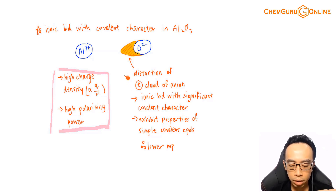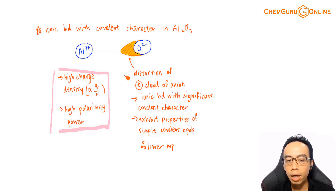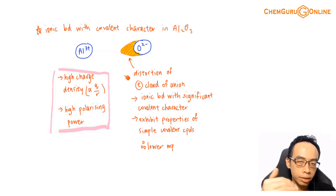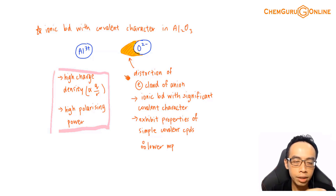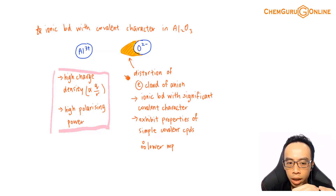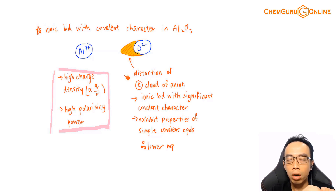For a metal cation, there's this property called charge density. Charge density is easy to quantify — it's just charge divided by radius. If you have a high charge and a very small size, your charge density is very high. That means you have a very intense charge concentrated in a very small region, and therefore you have high polarizing power. Polarizing power is the ability of the metal cation to influence or disturb the electron cloud of neighboring species.